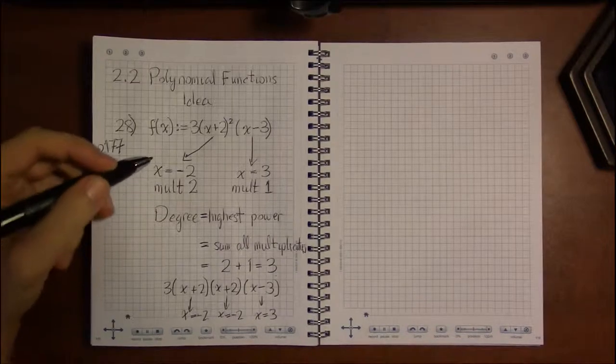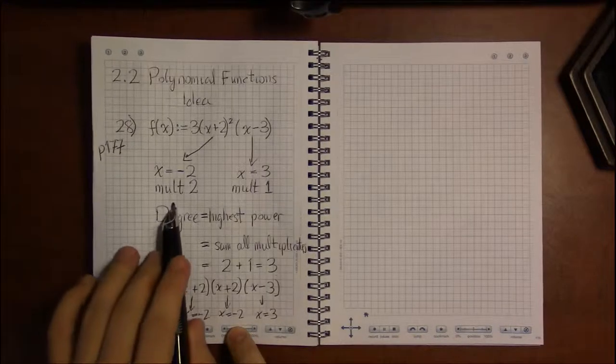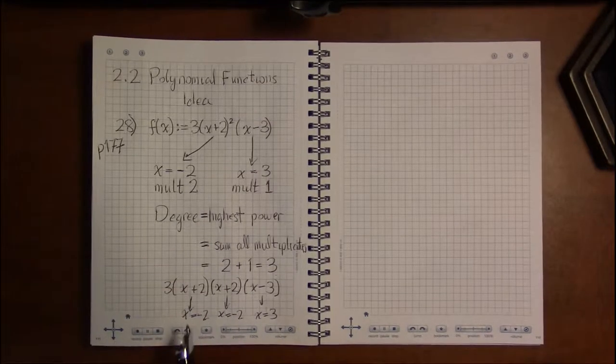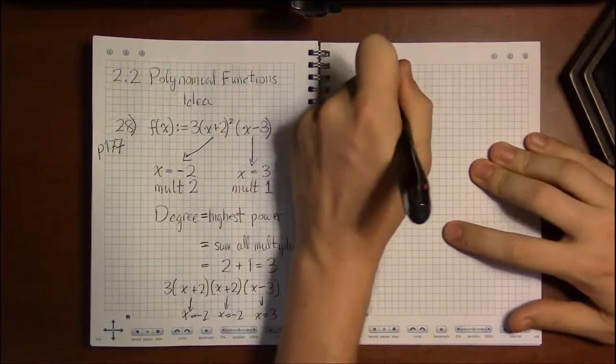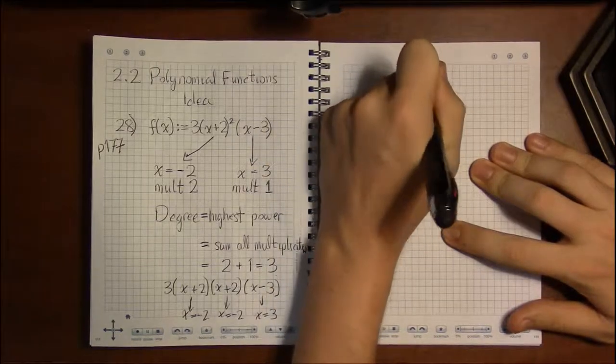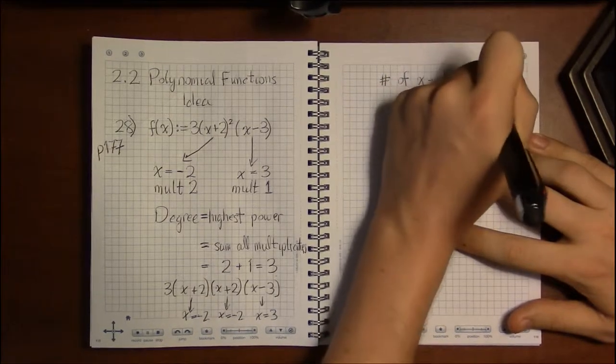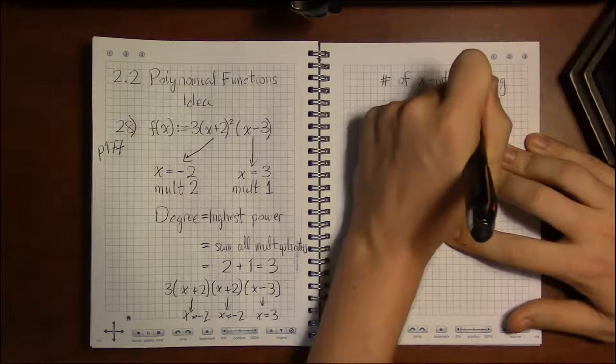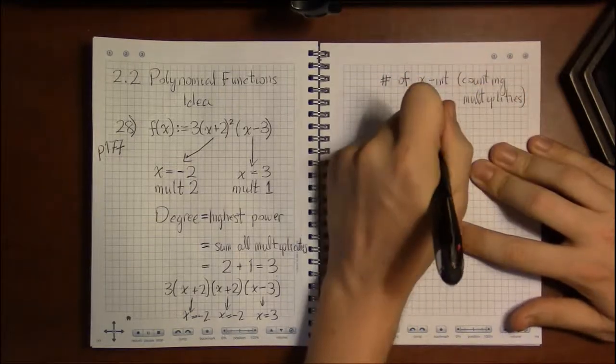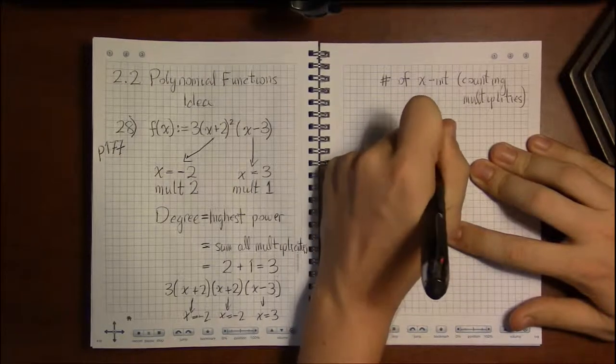See, x minus 2 in some sense occurs—x equals minus 2 is in some sense a root of this polynomial twice. That's what multiplicity is. It's counting how many times is this a root for this polynomial. A multiplicity of 2 says it's kind of a repeated root. If you count those repetitions...